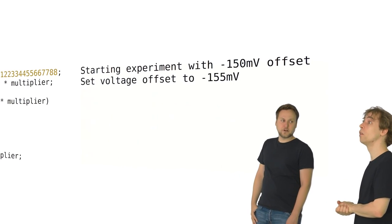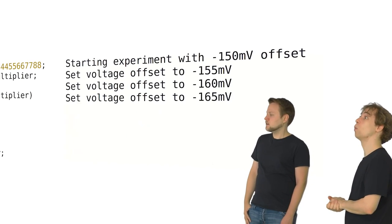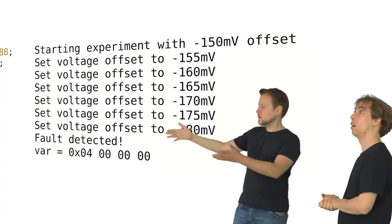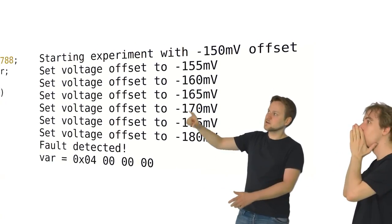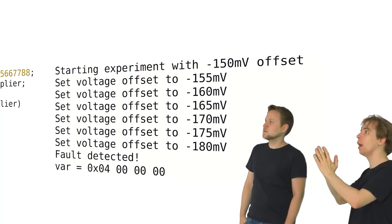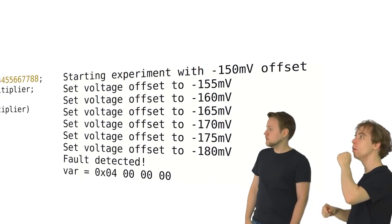So 150, 155, 160, 165, 170, 175, 180. It faulted. See? We reached the unreachable code with this proof of concept. Wow. And that's the bit error you see here. Yeah. Wow.